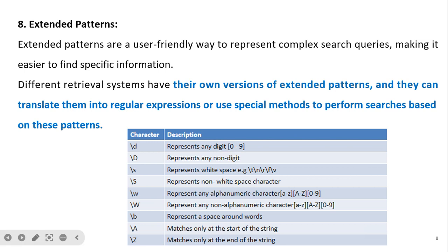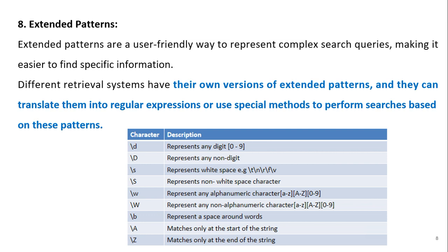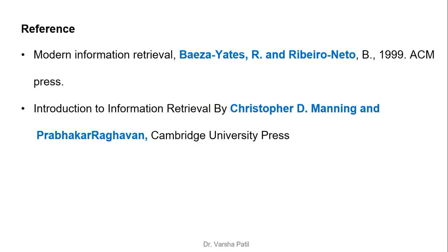Extended patterns are a user-friendly way to represent complex search queries, making it easier to find specific information. Different retrieval systems, such as Python, have their own versions of extended patterns that can be translated into regular expressions or use special methods to perform searches. For example, '\d' finds strings containing only digits, '\D' finds non-digit characters, '\w' finds alphanumeric characters, and '\W' finds non-alphanumeric characters. Extended patterns are used by retrieval systems to find particular patterns in documents.